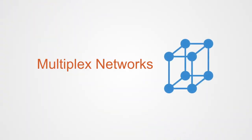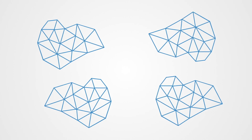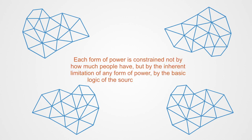Political networks and power are very complex phenomena. They're multi-dimensional in nature. Power within a large modern society is best thought of as a network of overlapping networks, each operating and exerting influence along a certain dimension. Each form of power is constrained not so much by how much of it people have, but by the inherent limitation of any form of power—that is to say, by the basic logic of that source of influence.